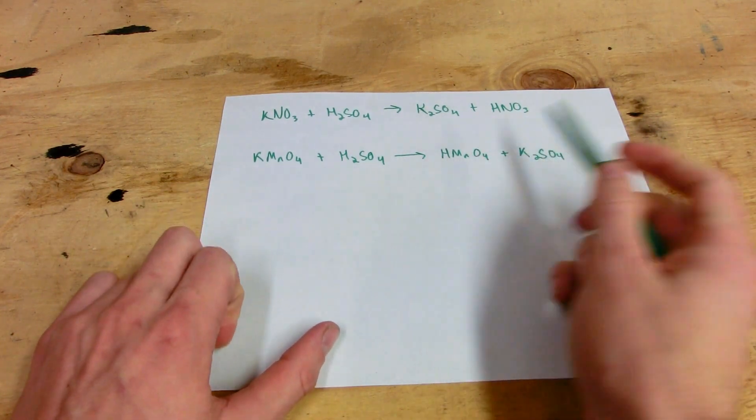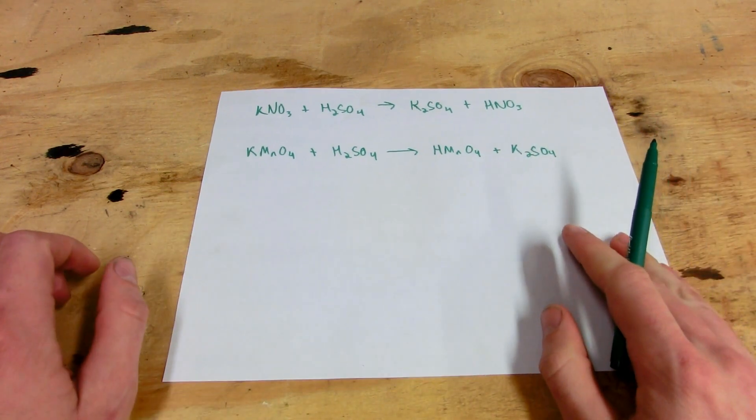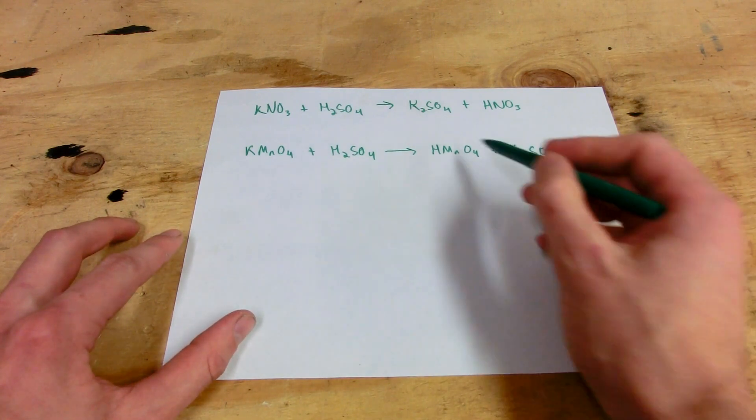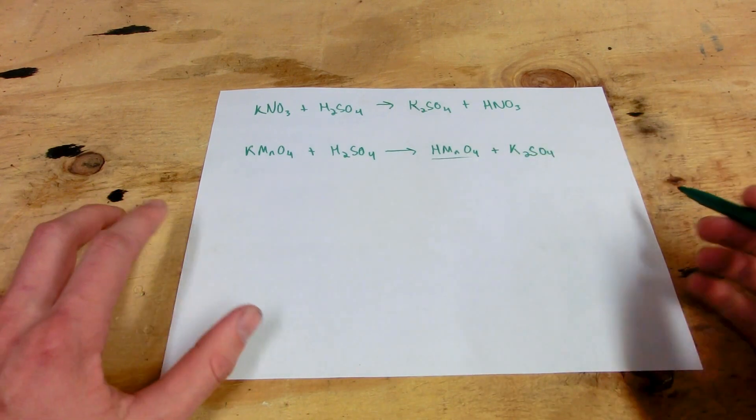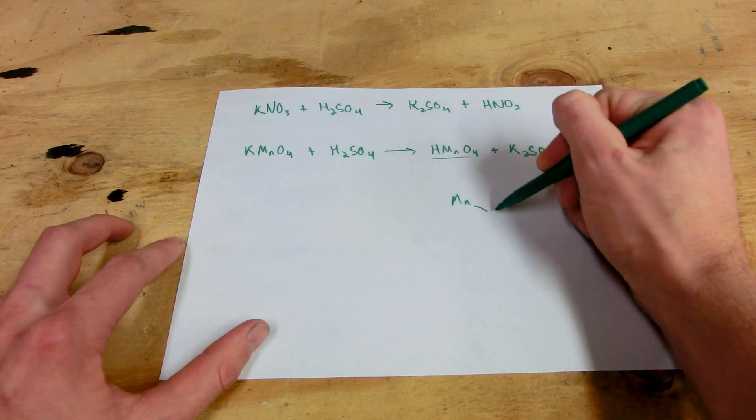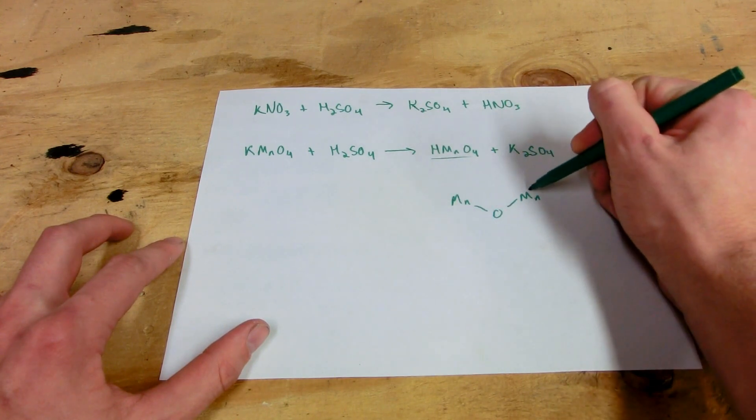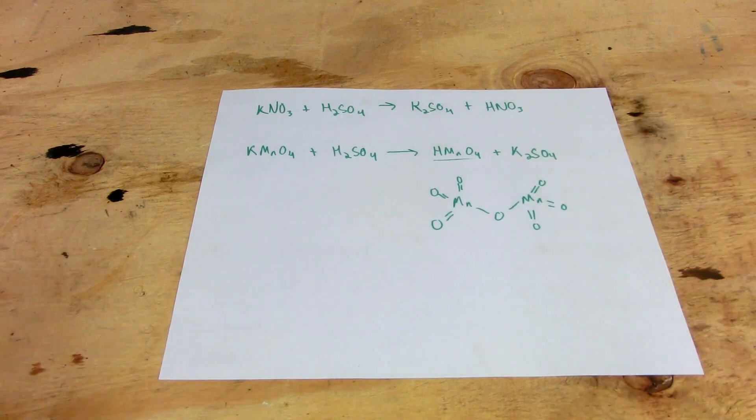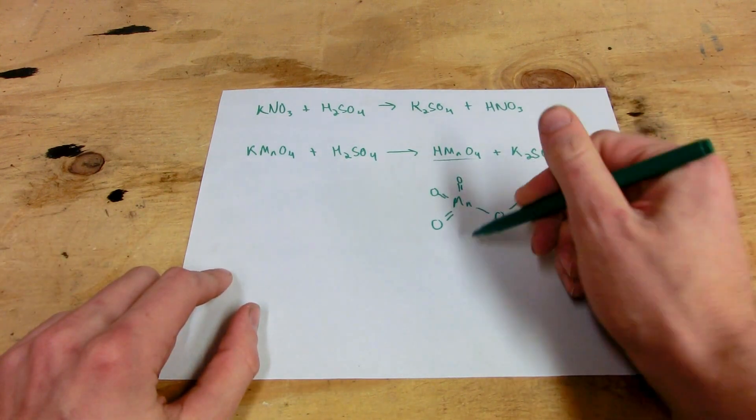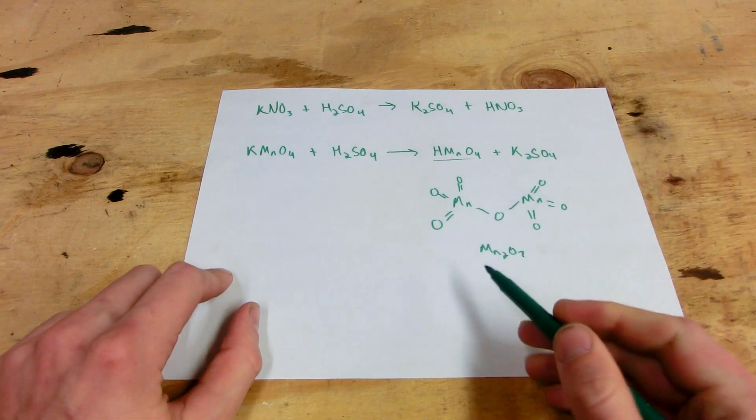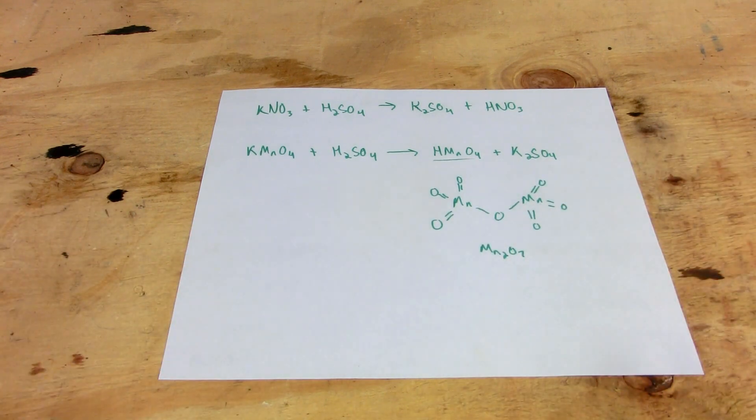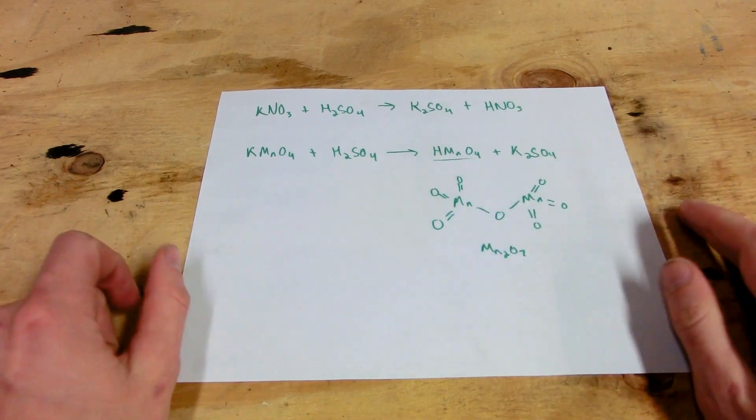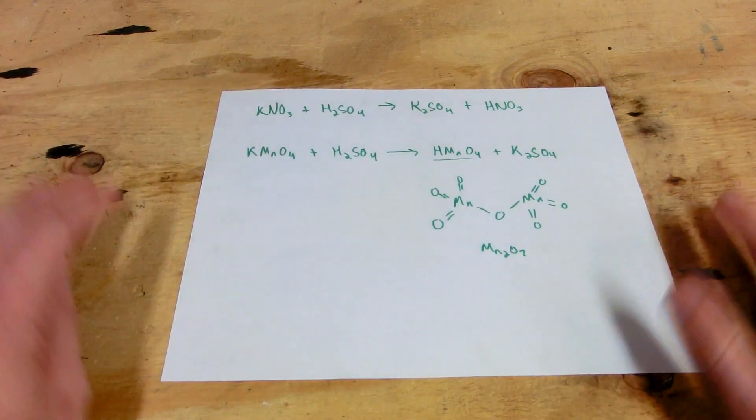Now permanganic acid actually doesn't exist, except in very, very tiny quantities in an equilibrium, because it's very unstable. And instead, what happens is that the sulfuric acid, which acts as a dehydrating agent, dehydrates the permanganic acid to permanganic anhydride, which looks like this. Remember how the anhydrides look? It's like two acids bonded together with an oxygen. There. And if we count this, we get one, two, three, four, five, six, seven oxygen. So we have Mn2O7, or manganese heptoxide. Everyone calls it manganese heptoxide because permanganic anhydride sounds long and boring. But as it turns out, this is exactly how manganese heptoxide comes about. And this is why that happens.